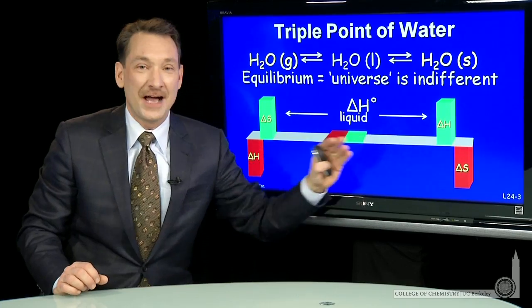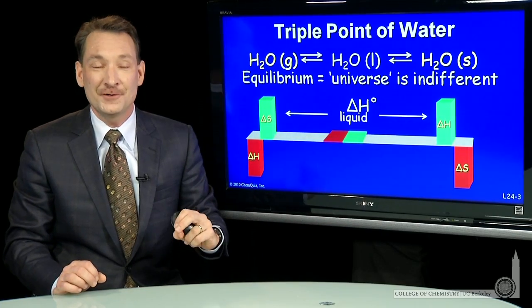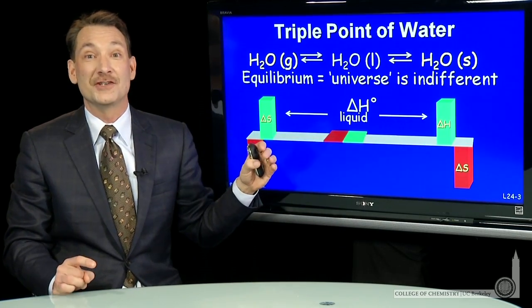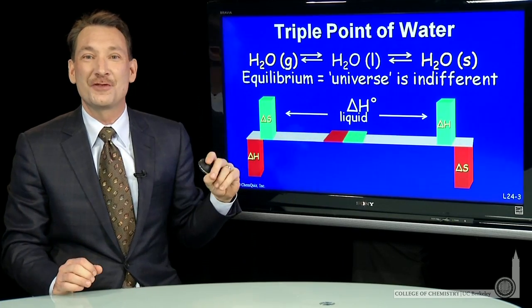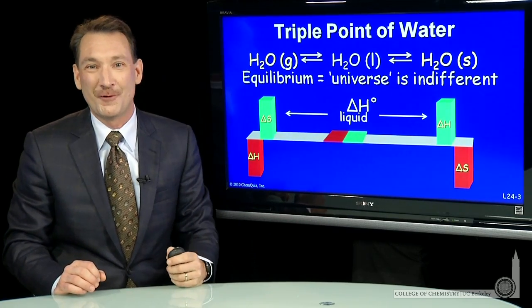So a careful balance between the system and surrounding entropies can give you equilibrium situations. And if you're very careful, that equilibrium can exist between the three phases. And that's what happens at the triple point of water.